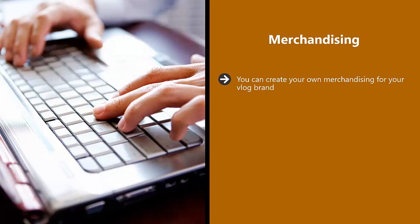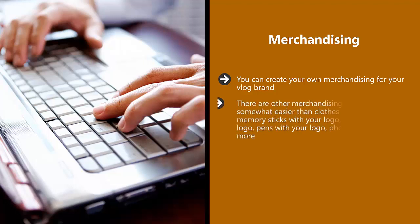Merchandising: you can create your own merchandise for your vlog brand. A good example is a t-shirt or sweatshirt with your brand logo on it, or even caps. There are companies that will supply the clothes or caps in the right sizes and colors with your design printed on them. Other merchandising goods that are somewhat easier than clothes include USB memory sticks with your logo, calendars, pens, phone cases, and much more.